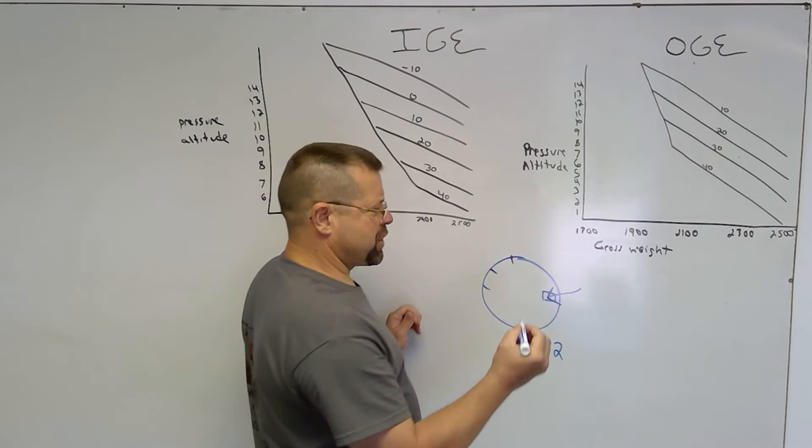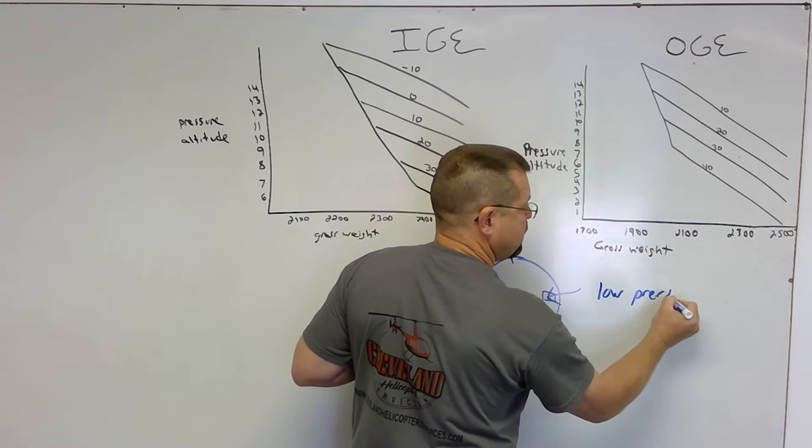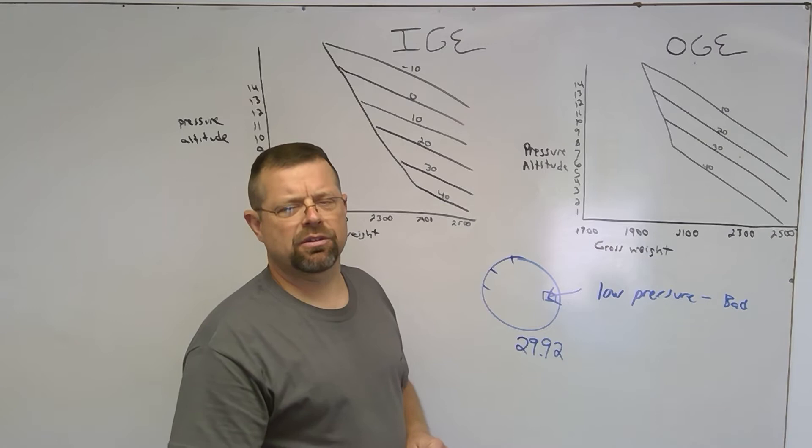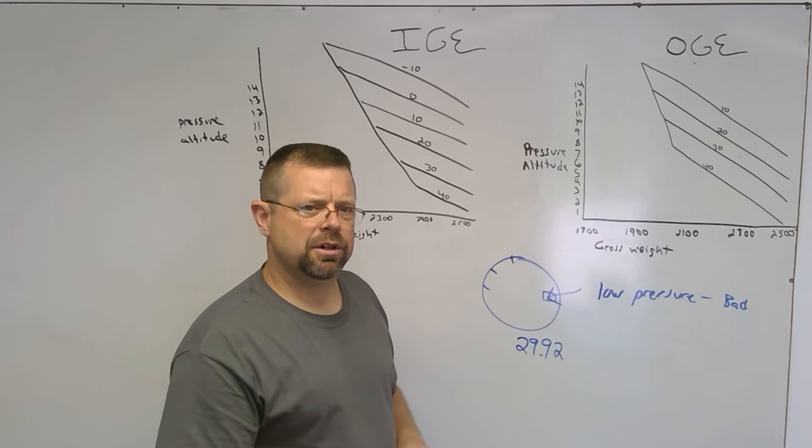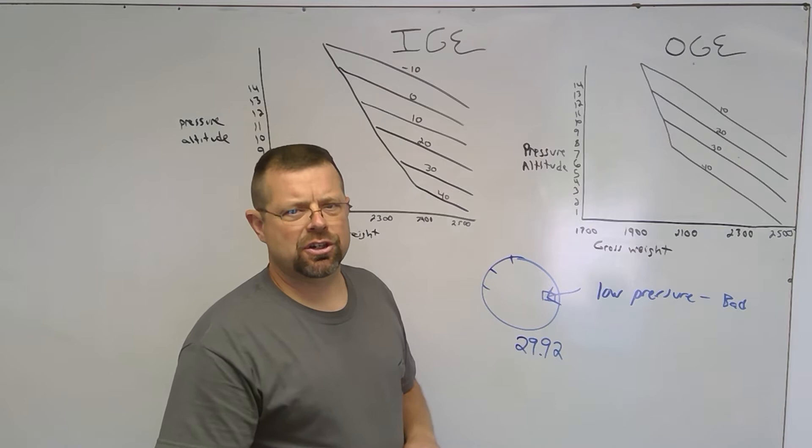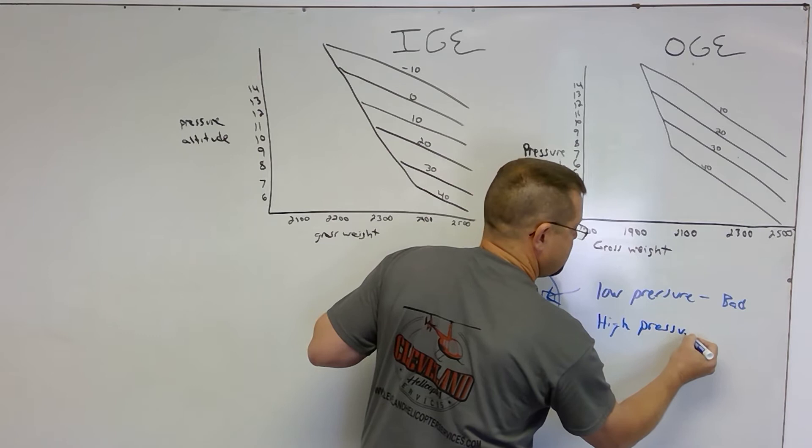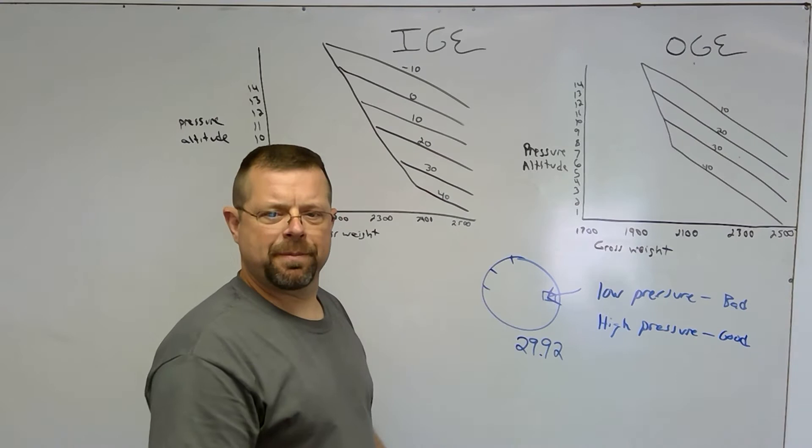Low pressure is bad for performance. In other words, if the barometric pressure for the day is less than 29.92, that is low pressure and that cuts into the performance of the helicopter. The helicopter will perform as if it is at a higher elevation, closer to its ceiling. High pressure is good for performance.